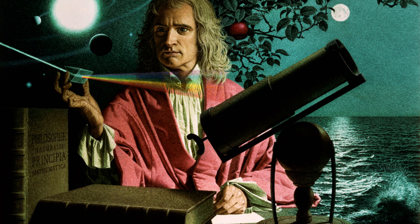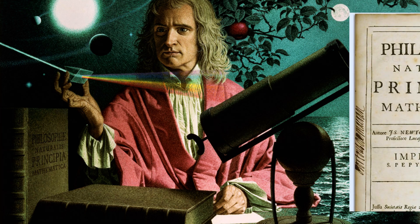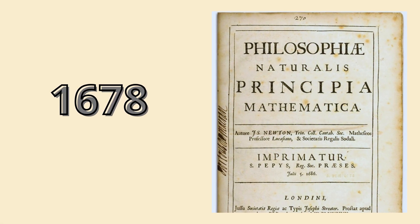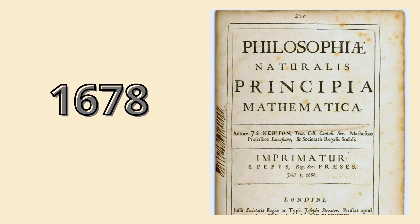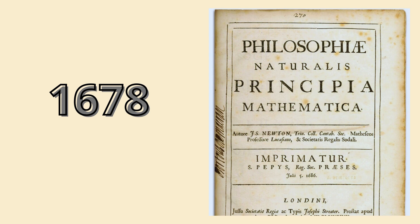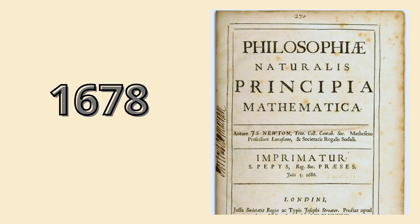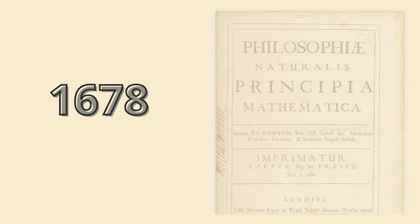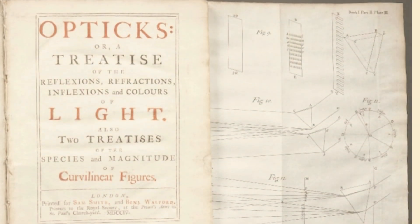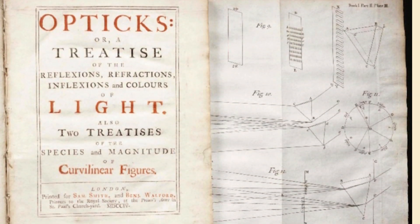We can't start talking about Einstein without talking about the world of classical physics — Sir Isaac Newton. In 1678, Newton published his book, Mathematical Principles of Natural Philosophy. In the book, he described his three laws of motion and the law of gravity. His book is considered one of the most important writings in human history.